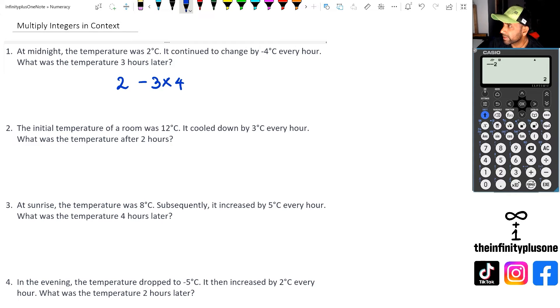Now you might be thinking, hang on, why is it negative three times four? Shouldn't it be three times negative four? You're right, it can be three times negative four because we're kind of saying the same thing, but just different context.